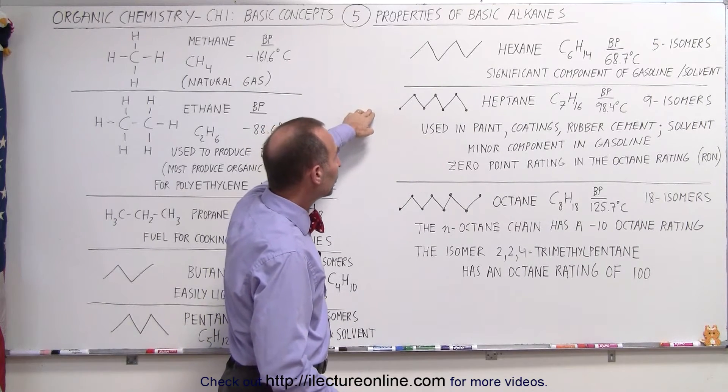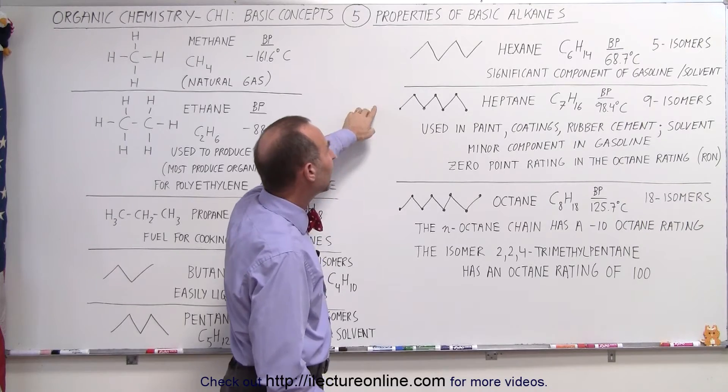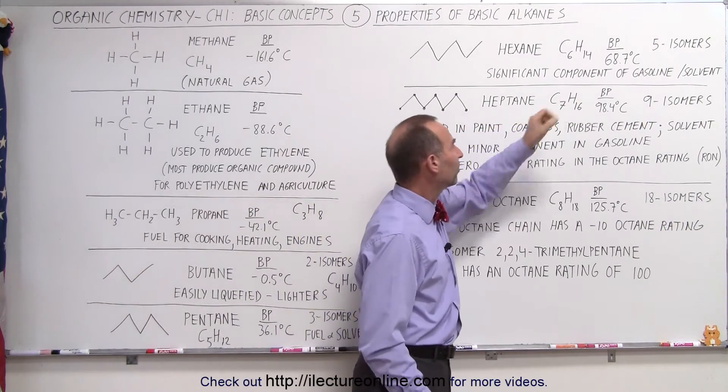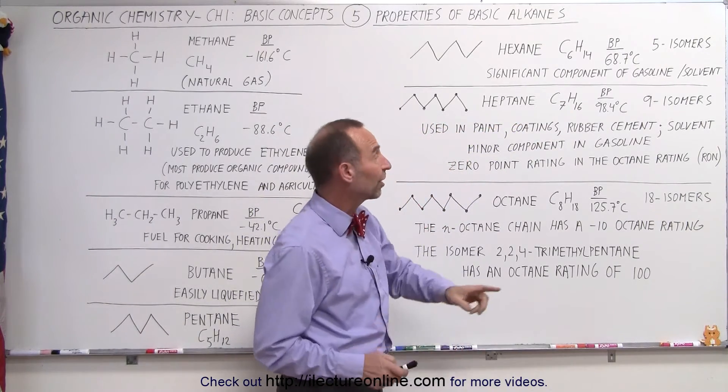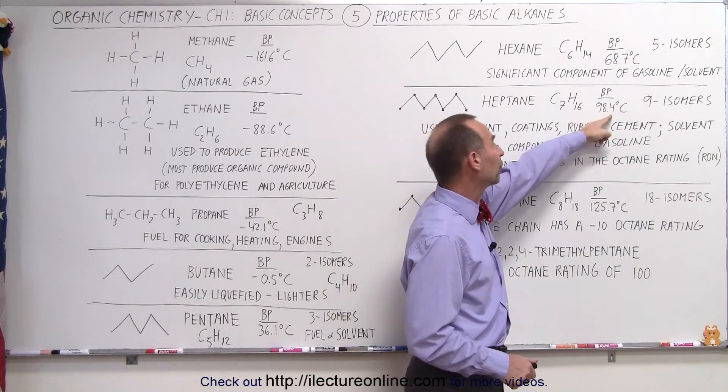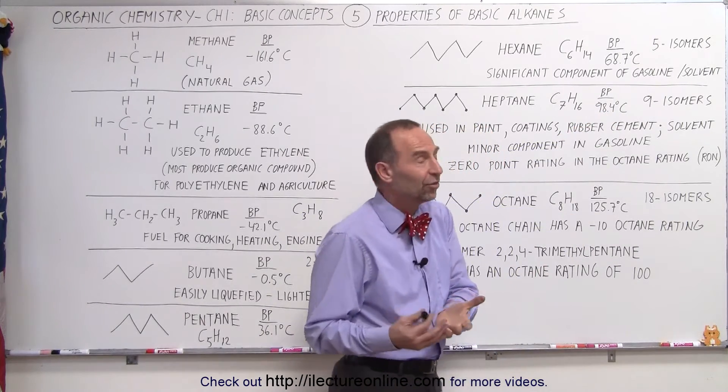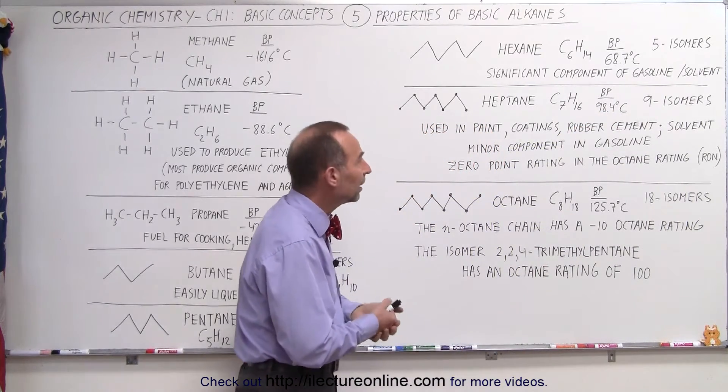The next molecule in the alkane set is heptane. Heptane has seven carbons and 16 hydrogens. Notice that the boiling point is 98.4 degrees centigrade so typically when you see heptane you'll see it in a liquid form.